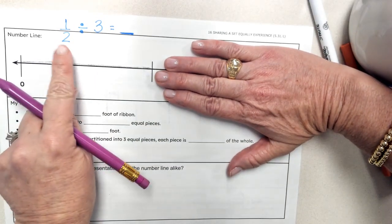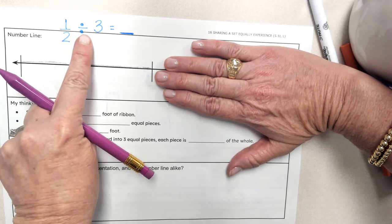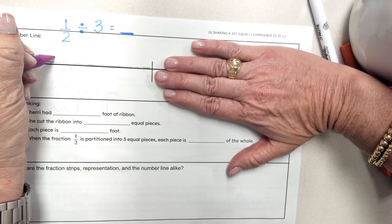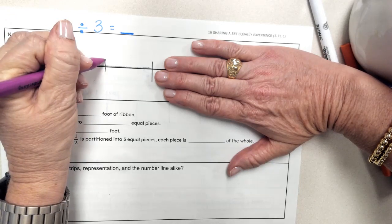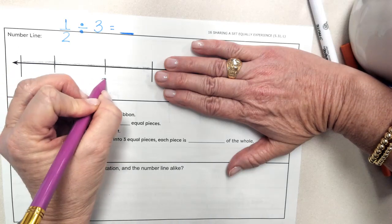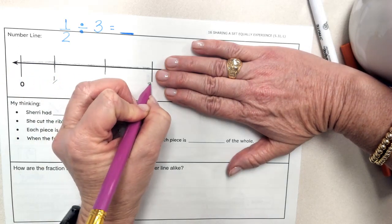And what do I want to do with this half that's represented? I want to divide it into three equal pieces. So this would be one, this would be two, this would be three.